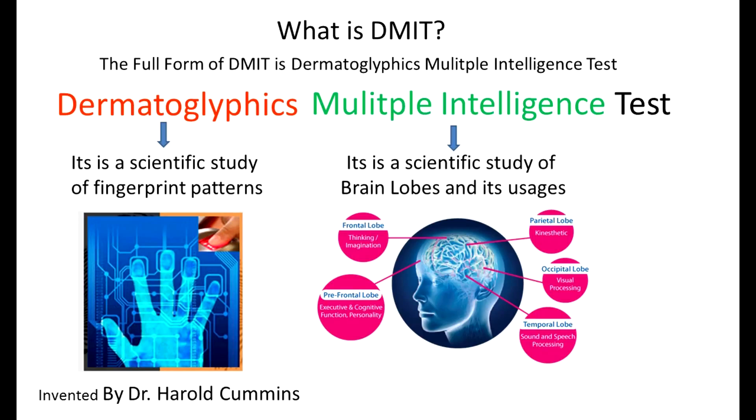The five brain lobes are: frontal lobe, pre-frontal lobe, parietal lobe, occipital lobe, and temporal lobe.